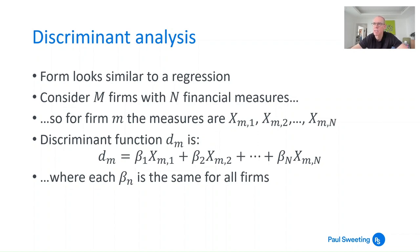The M firms fall into two groups: firms that have defaulted and firms that haven't defaulted — this is the training set. The key to finding the values of beta_m is to come up with values of the discriminant functions such that for a particular group, such as defaulted firms, those D_m values are grouped together as tightly as possible. Meanwhile, the average of D_m for the defaulted group and the average for the non-defaulted group should be as far away from each other as possible.